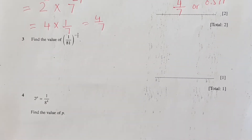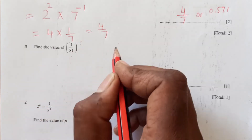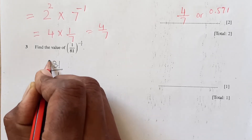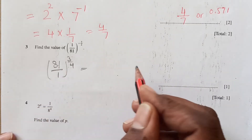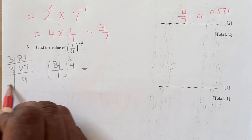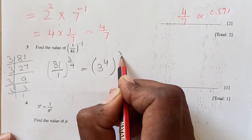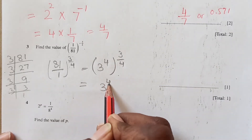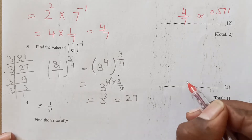Question 3: find the value of (1/81)^(negative 3/4). First, we change from negative to positive by taking the reciprocal: (81/1)^(3/4). Now 81 = 3^4, so we have 3^(4 × 3/4) = 3^3. And 3^3 is 27. So the final answer is 27.